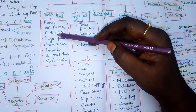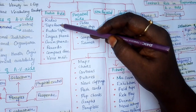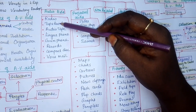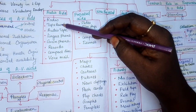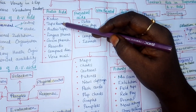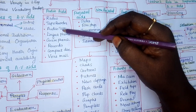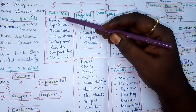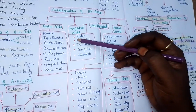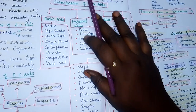Then write the advantages of using radio: easy to carry, very cheap, less power consumption. Write the limitations: if there is a power problem you need a battery. This is how you answer a five-mark question. If the question is on classification of audiovisual aids, simply write the classification.